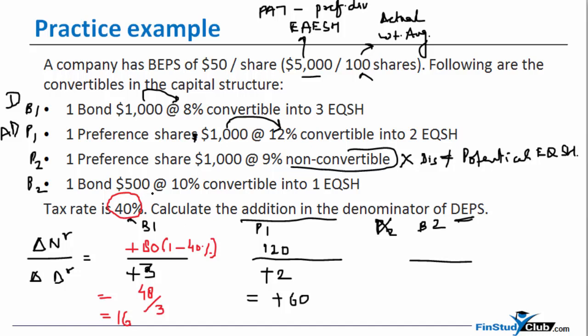In case of the second bond, the delta NR and delta DR. My delta DR is always simpler, so therefore you should write that first, which is plus 1. How much is the amount that you would have paid to them in the current year? That is going to be 500 into 10 percent. And again, since it is a bond, interest will be tax deductible, therefore you'll have to do 1 minus T.